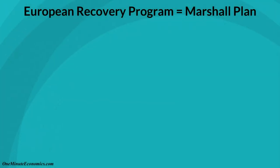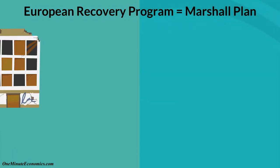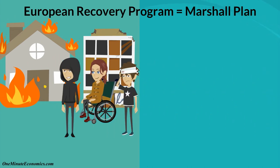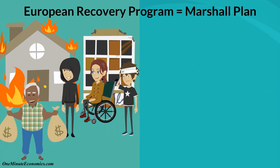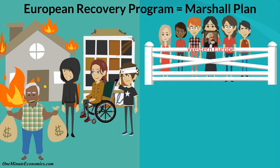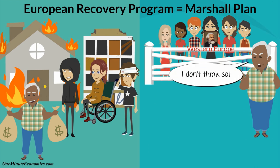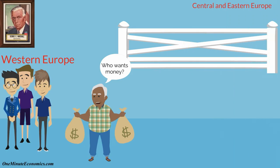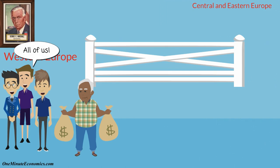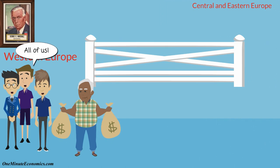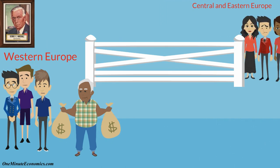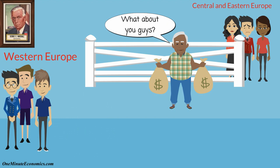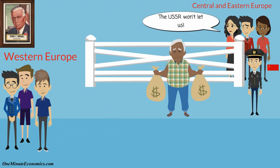The Marshall Plan, officially called the European Recovery Program, was created by the U.S. with the humanitarian intention of helping European nations recover after World War II, whereas the geostrategic goal was stopping the spread of Marxism and shaping European policy. It was announced by George Marshall on the 5th of June 1947 and primarily ended up benefiting Western Europe, mainly because the USSR refused to let the Central and Eastern European countries that were under its sphere of influence be involved.